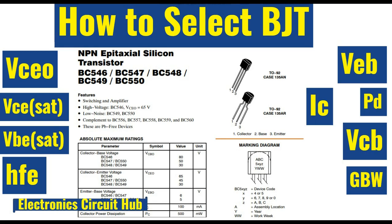How will you select the NPN transistor for your particular application? Let us say you want to drive a LED with 20 milliamps current. In order to drive a LED by using an NPN transistor, how will you select it and what all parameters will you look into? So after watching this video, you will be able to understand different parameters used in BJT selection. For this video, let us consider your application current is 20 milliampere and you want to select an NPN transistor.